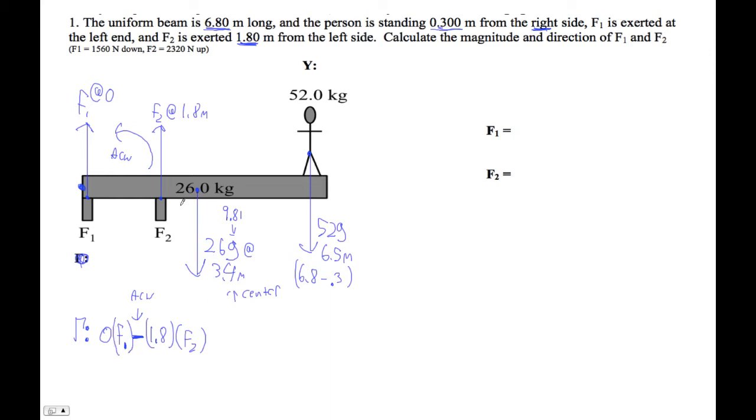Then I have a positive torque. This force is going to tend to make the beam rotate clockwise about that point, so it's positive—positive 3.4 times 26 times 9.8. Then the gravity on this person is going to tend to make the beam go clockwise about that point, so I go plus 6.5 times 52 G. And that's all my torque, so that equals 0.